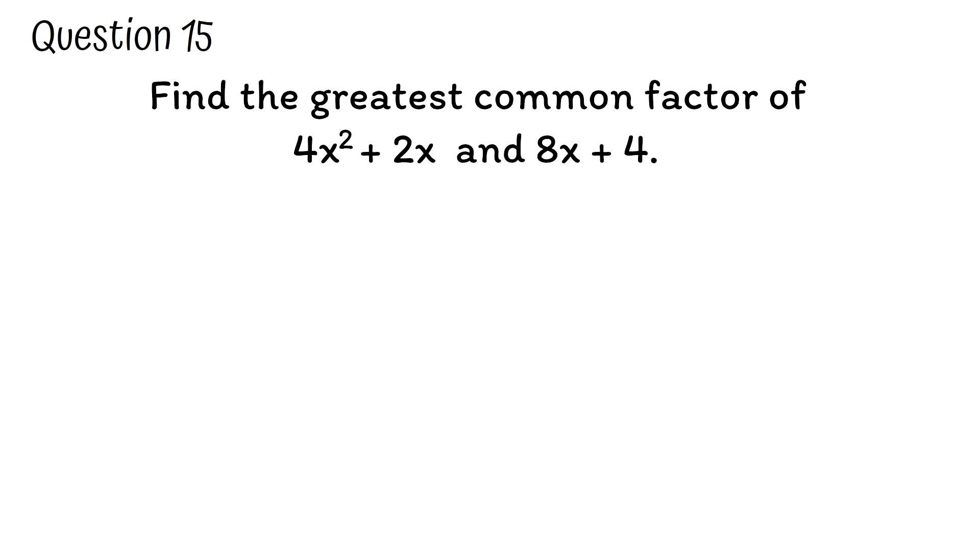Question 15. Find the greatest common factor of 4x squared plus 2x and 8x plus 4. To find the greatest common factor of two polynomials, we need to factor each polynomial and then identify the common factors. For 4x squared plus 2x, we can factor 2 out because 2 can divide both 4 and 2 without a remainder. 4 divided by 2 is 2, and 2 divided by 2 is 1. For the x, we factor out the x with the smallest exponent, in this case x exponent 1. What will be left is x for this one.